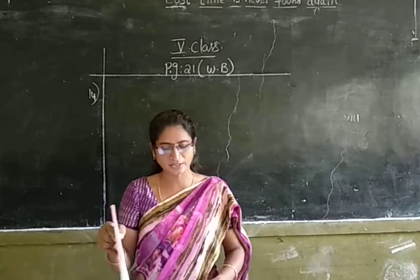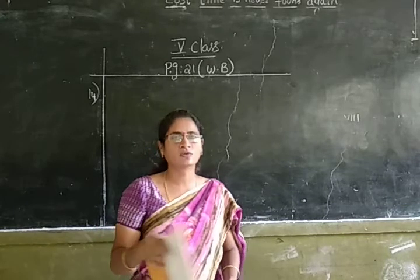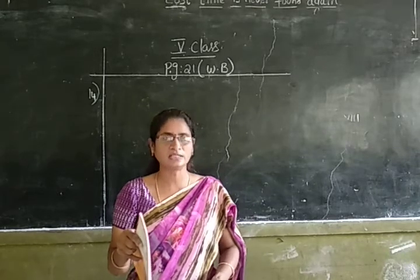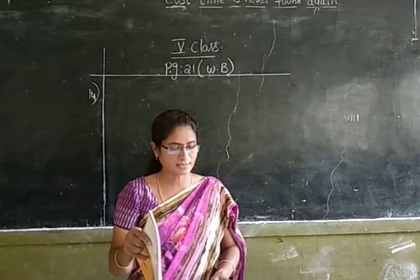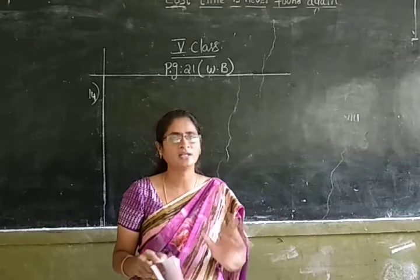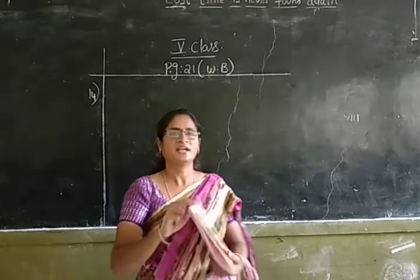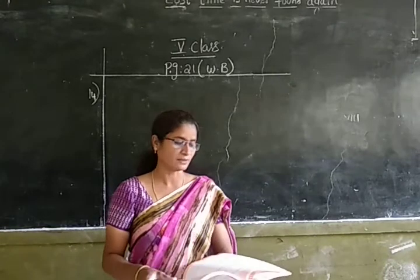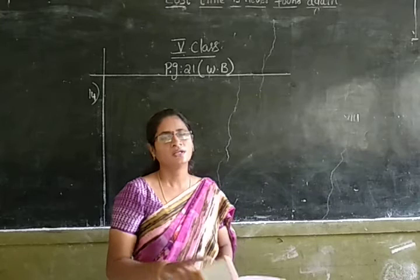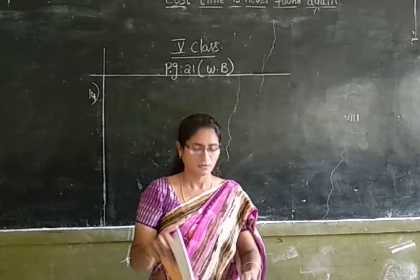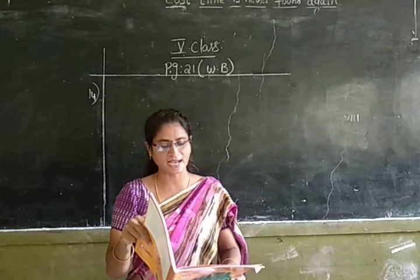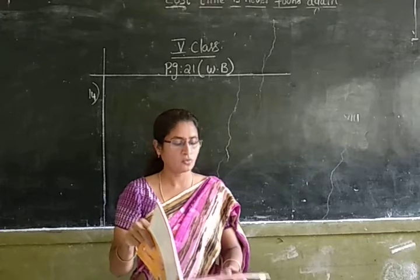A Roman emperor decided to test two of his courtmen — Russell and Taurus. He sent them to buy items with the same amount of money. The one who would bring more items to the court will be the winner. Russell bought XXII items and Taurus bought XIX items. Who won the contest?